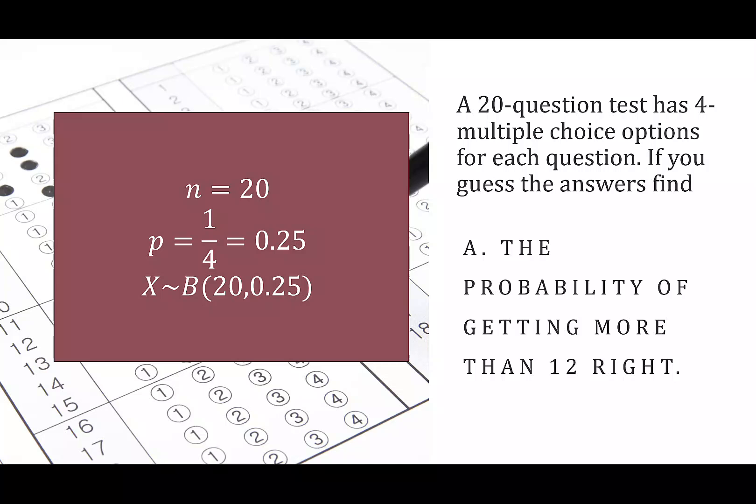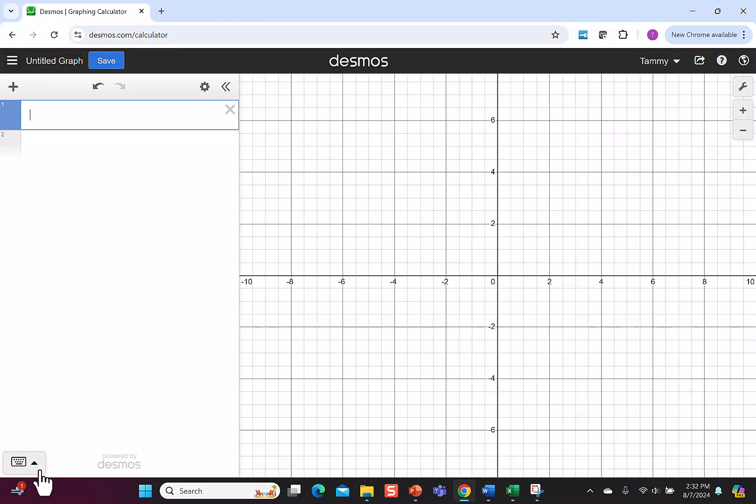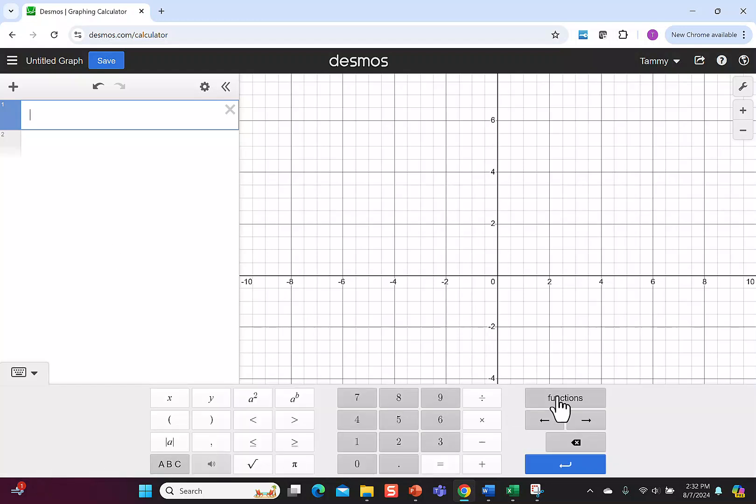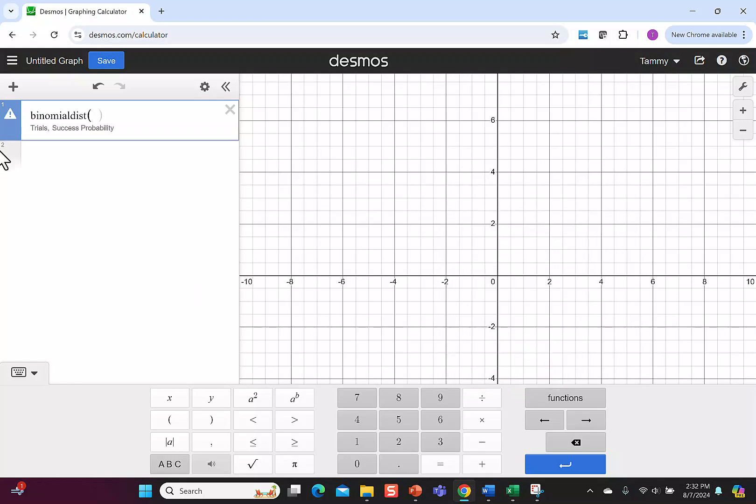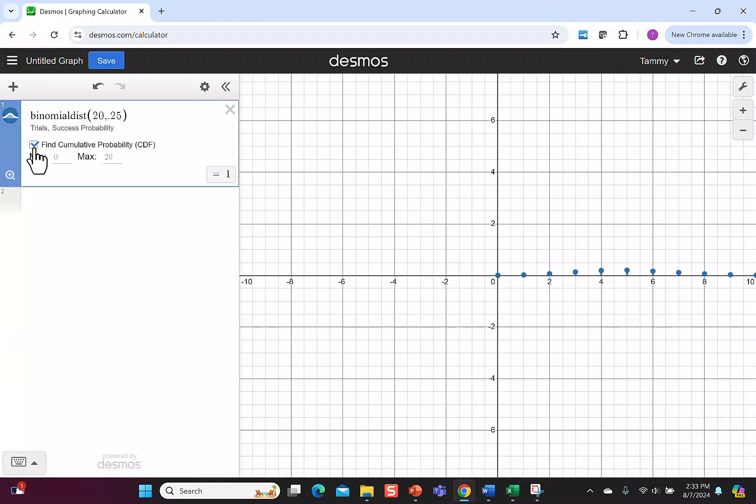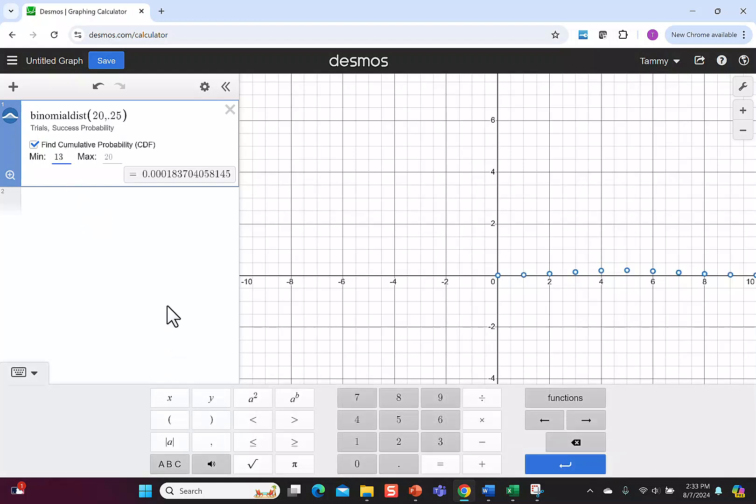In Desmos, we need to start by opening up our keyboard, going to the functions, look for distributions, and you want to pick binomial. Then notice it says how many trials. We say 20. It says what's the probability of each trial. We say 0.25. We want to say find the cumulative probability. That way we're not just looking at one answer. We're looking at a lot of answers. We want to know the probability of getting more than 12 right, so more than 12. We're going to start at 13, and our max goes to 20, so I'm going to type it in.